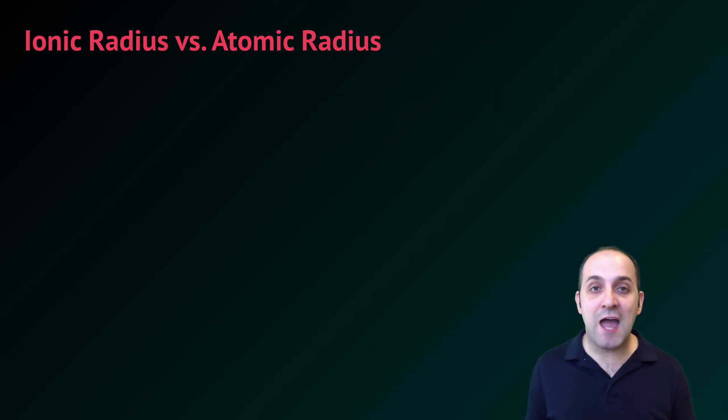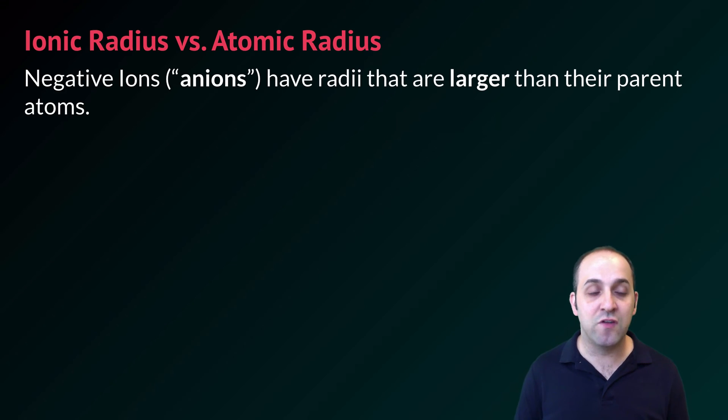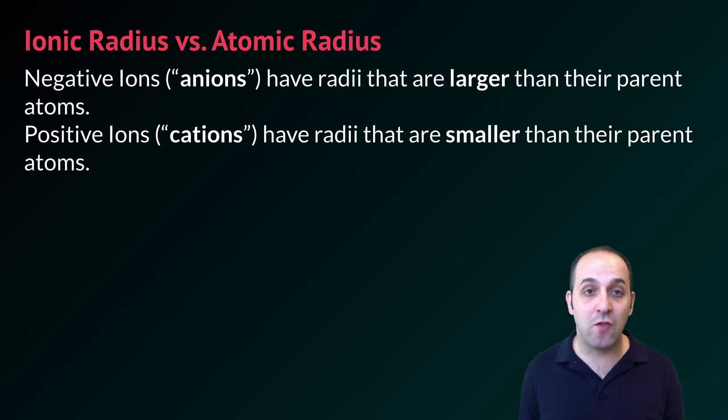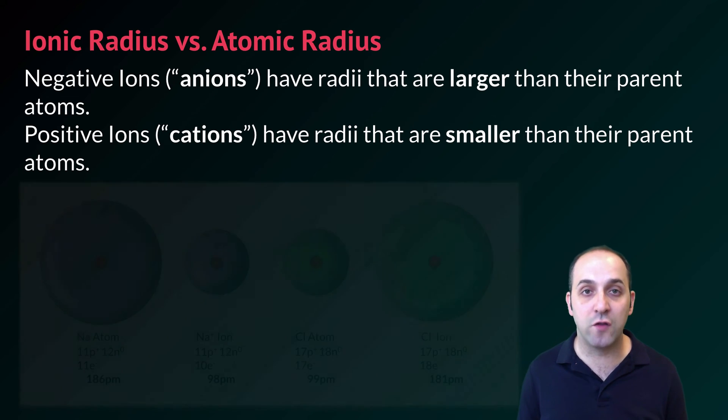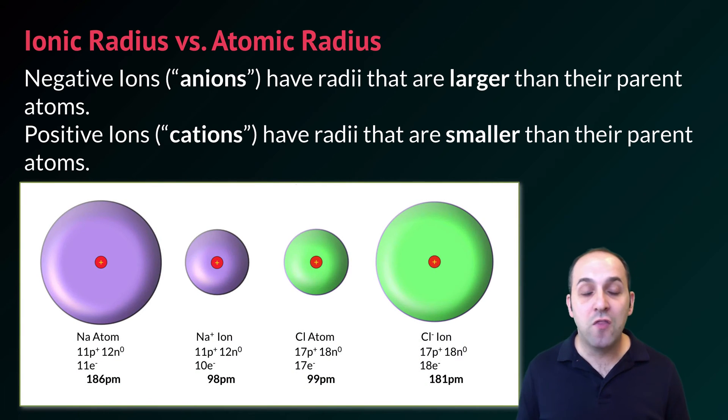Another thing to understand is that if an atom gains or loses electrons, that's going to affect its overall size. We see this in our examples. Negative ions, which we're going to call anions, have radii that are larger than their parent atoms, because they've gained electrons. Positive ions, which we're going to call cations, have radii that are smaller than their parent atoms, because they've lost electrons. We can see this in our original example. The sodium ion is considerably smaller than its parent atom, because it lost that one valence electron. Similarly, the chloride ion is considerably larger than its parent atom, because it gained that valence electron.